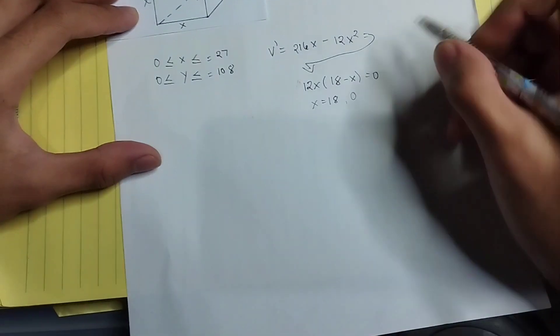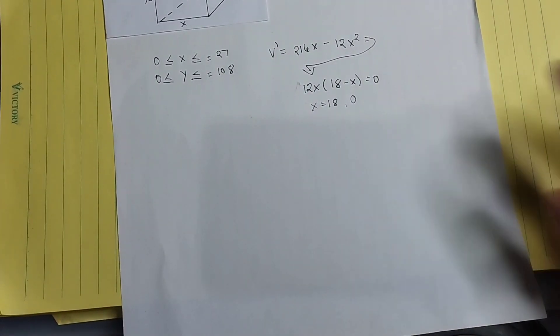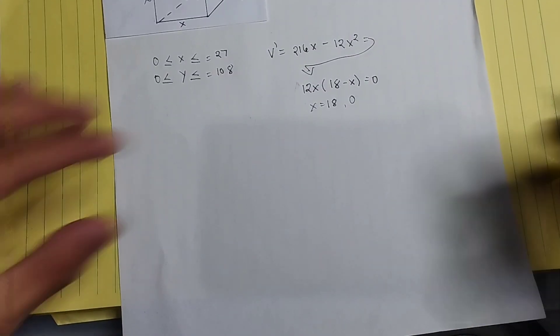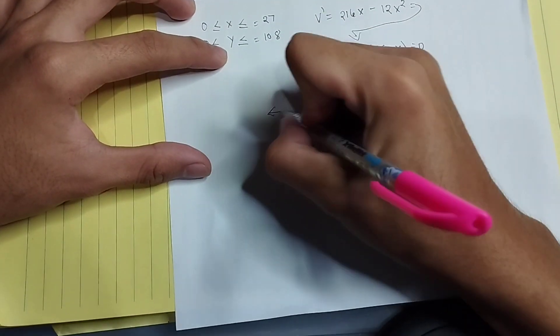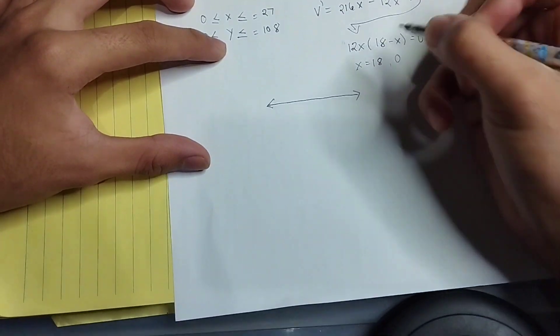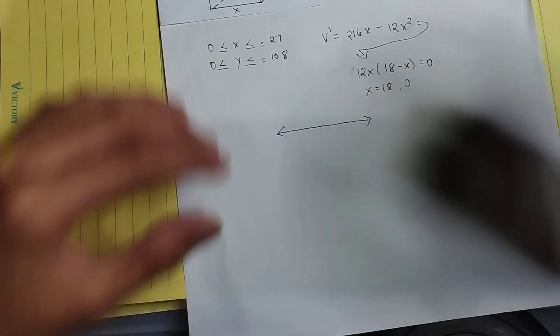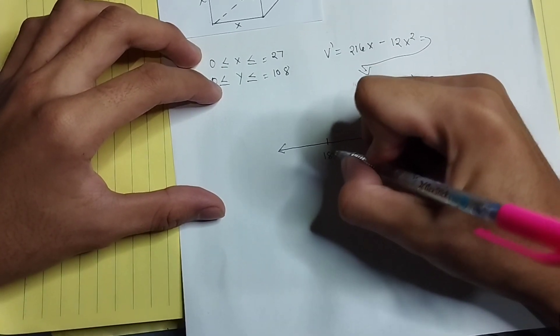And then we can now put a graph to identify the situation better. So we put 18 as a critical value.